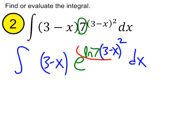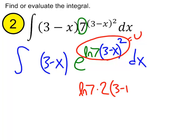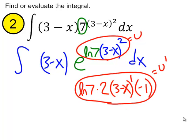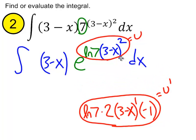If we are to look at this as e to the u power, this would be our u. And u prime would be, let's see, the constant out in front, ln 7, and then we derive that 3 minus x squared. We'd get 2 times 3 minus x to the 1 power. And let's do the chain rule on that. We need to multiply by the derivative of that inside, so that would be negative 1. So, that would be our u prime.